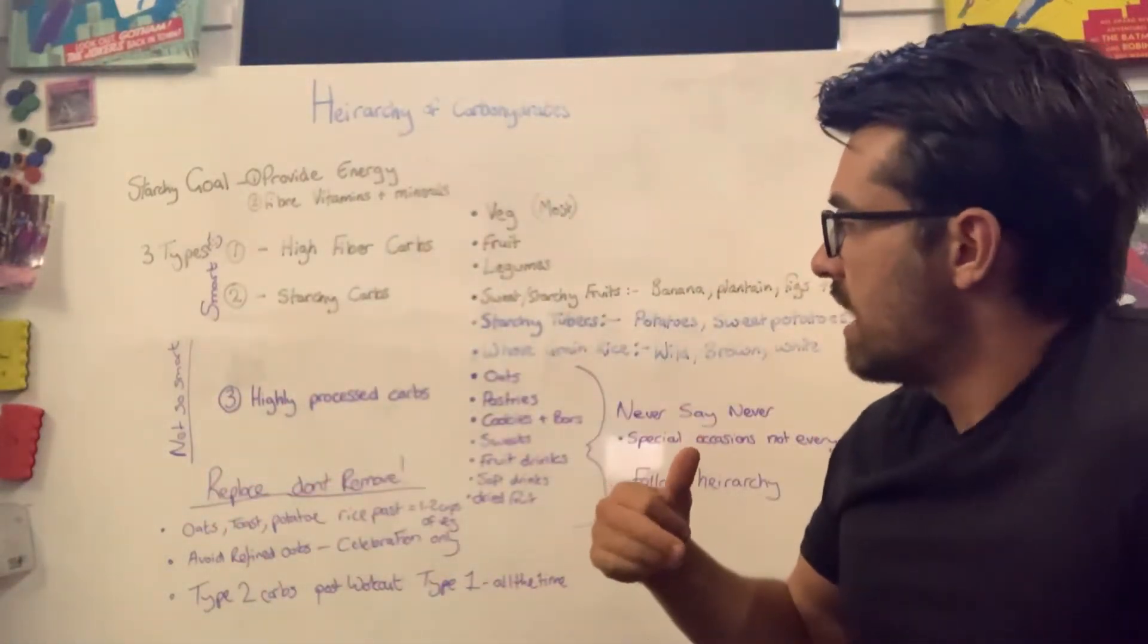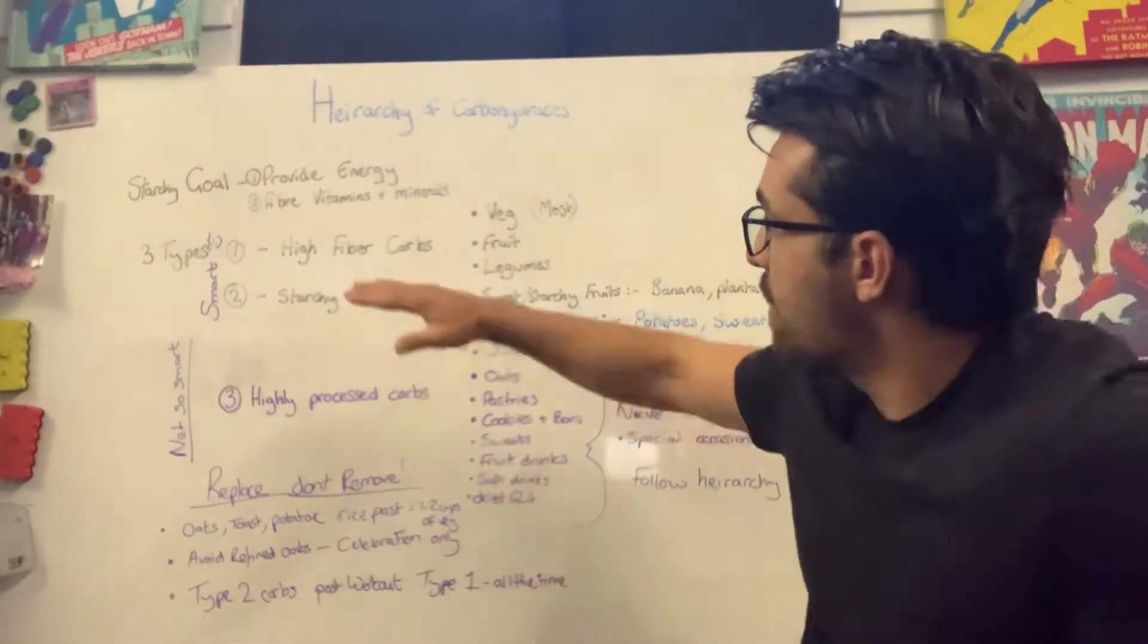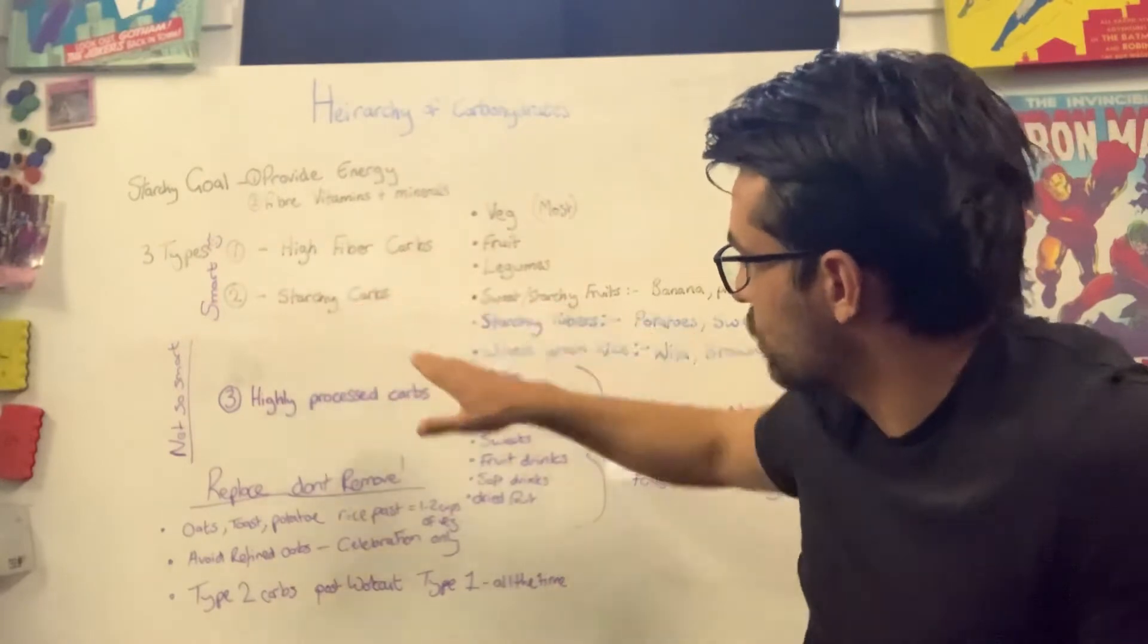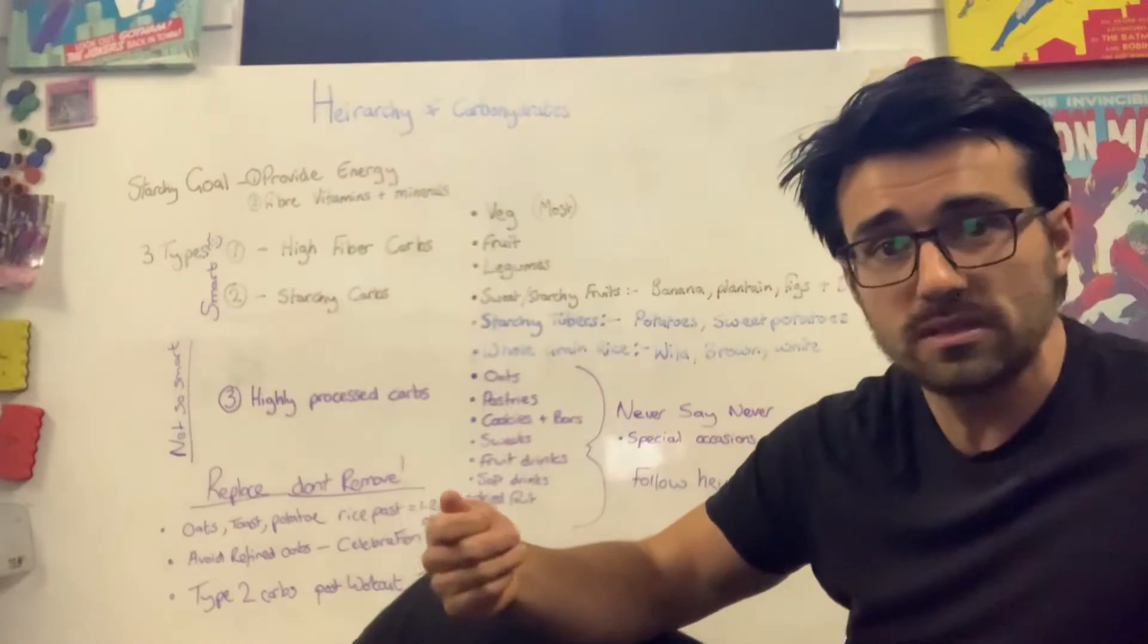So if I'm going from eating oats and toast and potatoes, rice and pasta, I'm probably looking at, okay, hierarchy-wise, let's try and replace those now. Let's try and replace it with one to two cups of vegetables. So if I'm having a piece of toast for breakfast, for example,